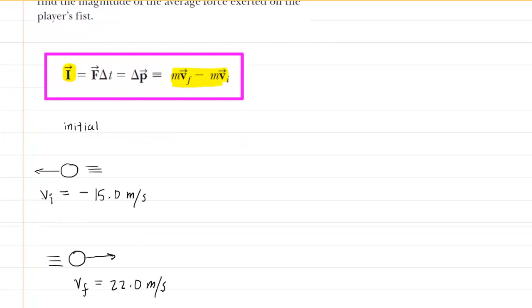we have been careful to say that the initial velocity is negative 15 meters per second. We've drawn the ball initially traveling to the left in our diagram, so we're going to make sure we call that initial velocity negative.